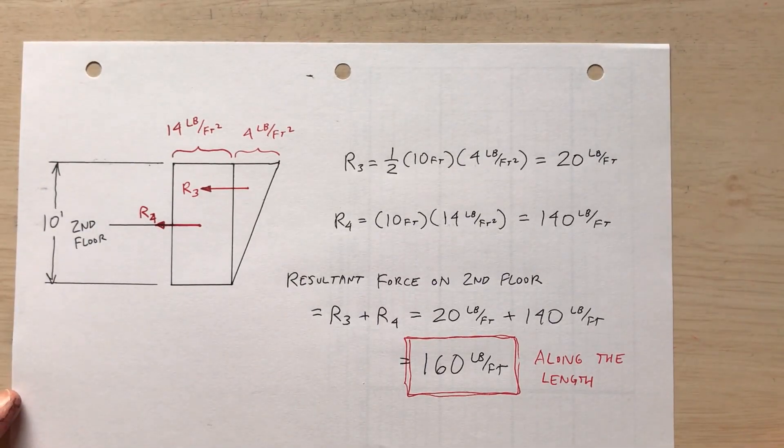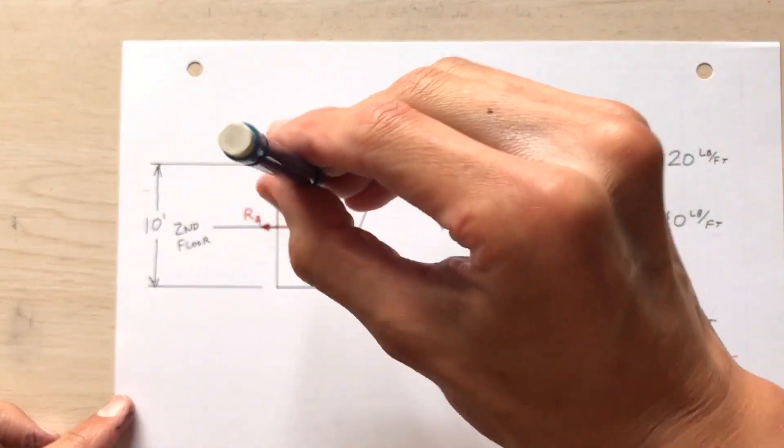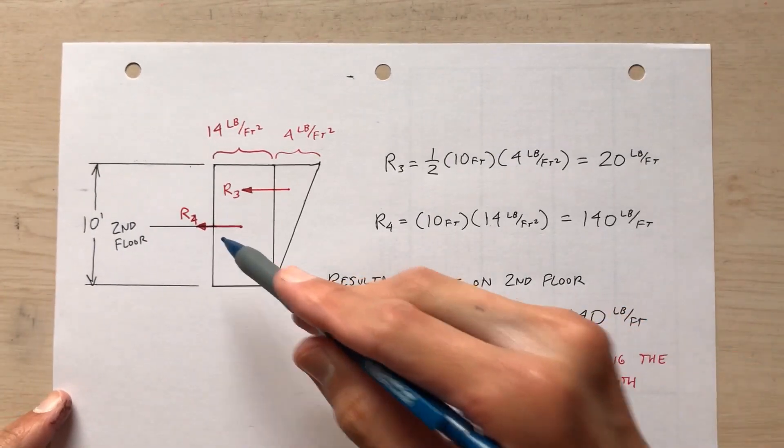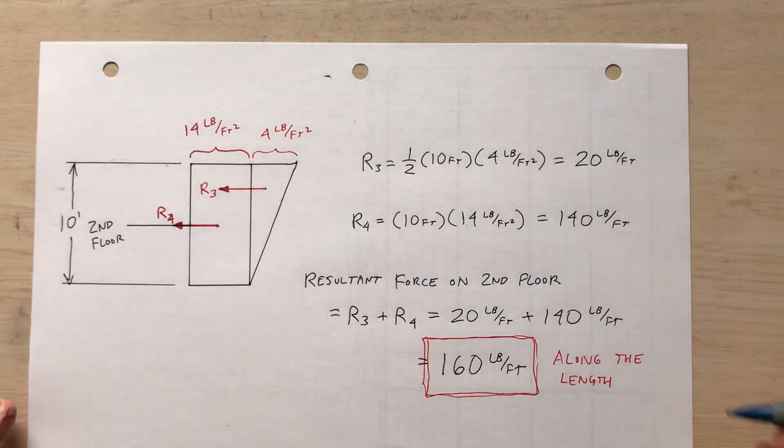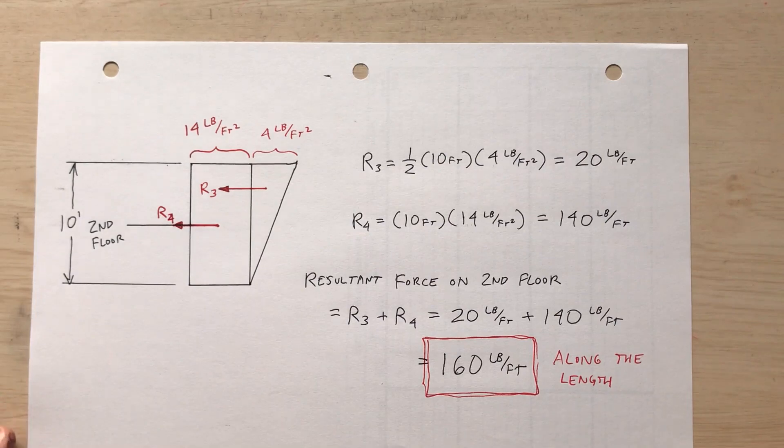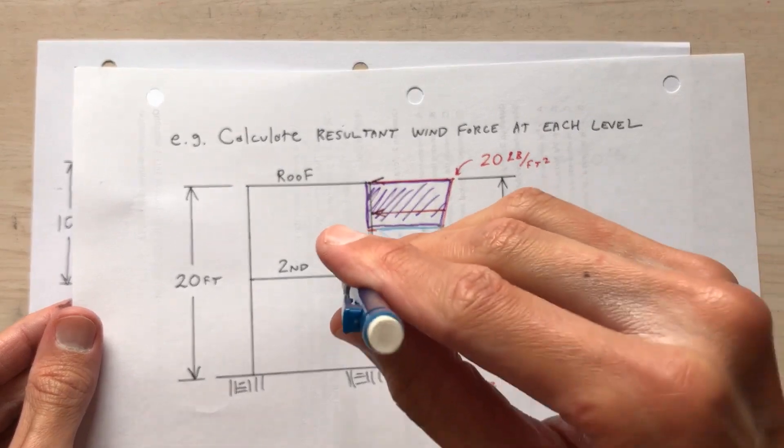That's 20 pounds per foot in and out of the paper. And then r sub four, the resultant of the rectangular, 10 feet times 14 pounds per square foot, that's 140 pounds per foot. I add those two together and I get 160 pounds per foot. That's along the length of the building, 160 pounds per foot in and out of the paper.